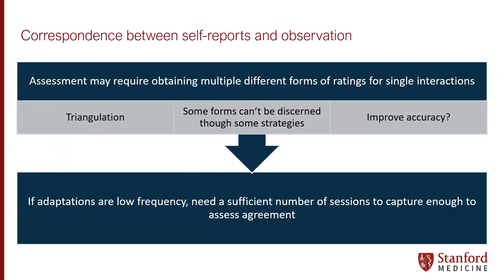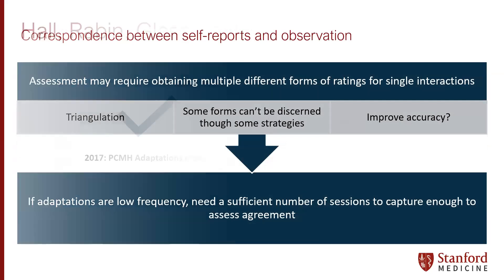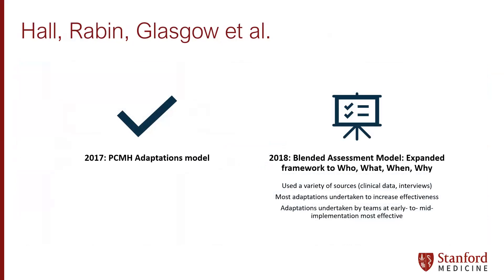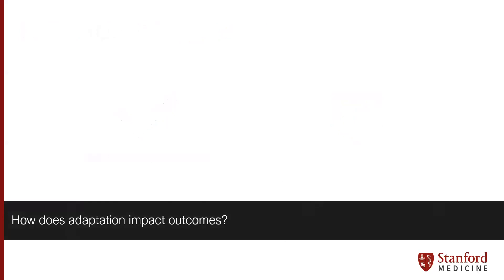Sometimes it might be necessary to triangulate between self-reports and observation, because some things might not be discerned through a single strategy. Particularly if adaptations are low frequency, we would need to observe a number of sessions to capture enough to assess agreement and reliably determine whether they had an impact. There's an example of a strategy that did triangulate using a variety of sources to assess adaptations, and they found that most adaptations were undertaken with the goal of increasing effectiveness. They seemed most effective when undertaken at early or mid implementation, indicating some planning or use of feedback from the implementation effort.